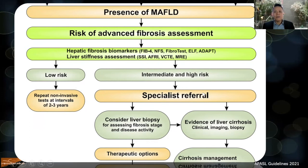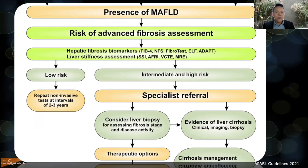If there is intermediate to high risk — stage three or stage four fibrosis — refer the patient to a specialist to properly assess for liver cirrhosis. If cirrhosis is confirmed, then HCC surveillance must be initiated as well.